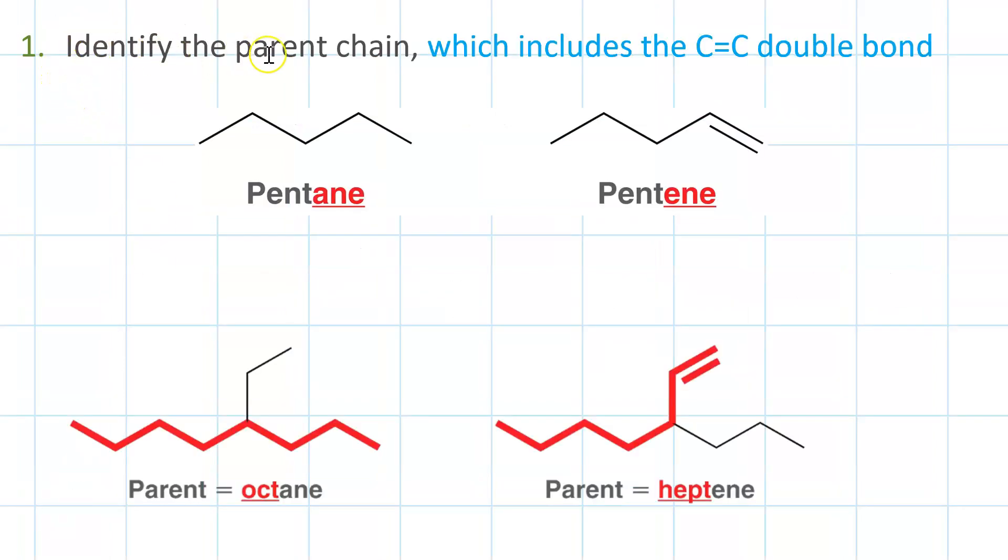To name an alkene, start out by identifying the parent chain. It's not just the longest carbon-carbon chain, it's the longest carbon-carbon chain that includes the C=C double bond. Here the parent chain is pentene. Here there are no double bonds, so we go with the longest carbon-carbon chain. But here, because we have a double bond, we actually are using a shorter chain because it's the longest that contains the double bond. So here the parent is heptene, despite the fact that the longest carbon-carbon chain has eight carbons in it.